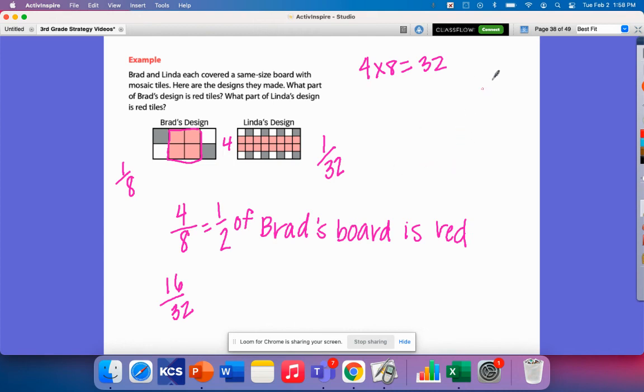And sixteen, I believe that sixteen is half, but let's just make sure. If I added up sixteen twice, that would be thirty-two. So this would also be half of Linda's board is red. So both boards represent, the red tiles represent half. It's just that they are broken up into different sizes.